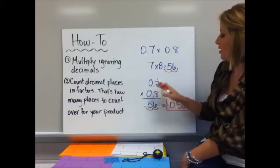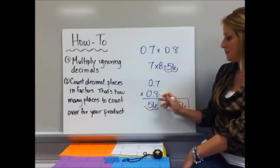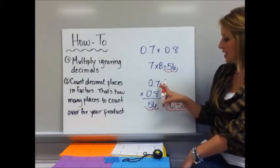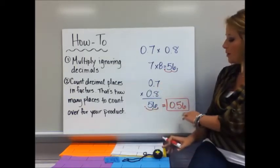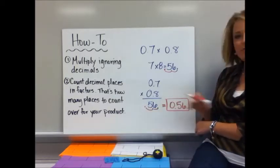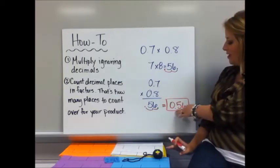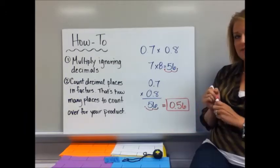Now when you're actually multiplying, you're likely going to stack it and it'll look like this. 8 times 7 is 56. I count 1, 2 decimal places. I move over 1, 2. And I rewrite it so my answer is not including the loop-de-loos as I like to call them. My answer is 0.56.